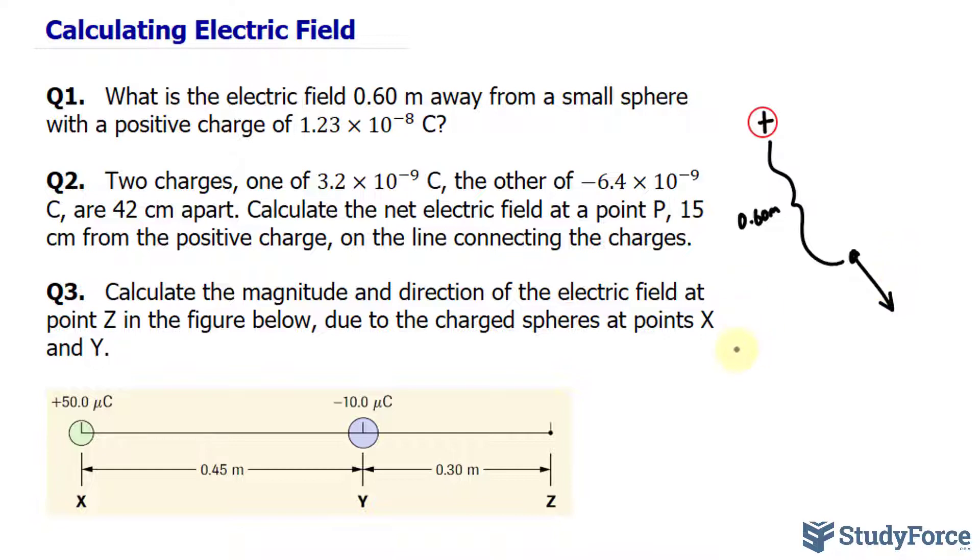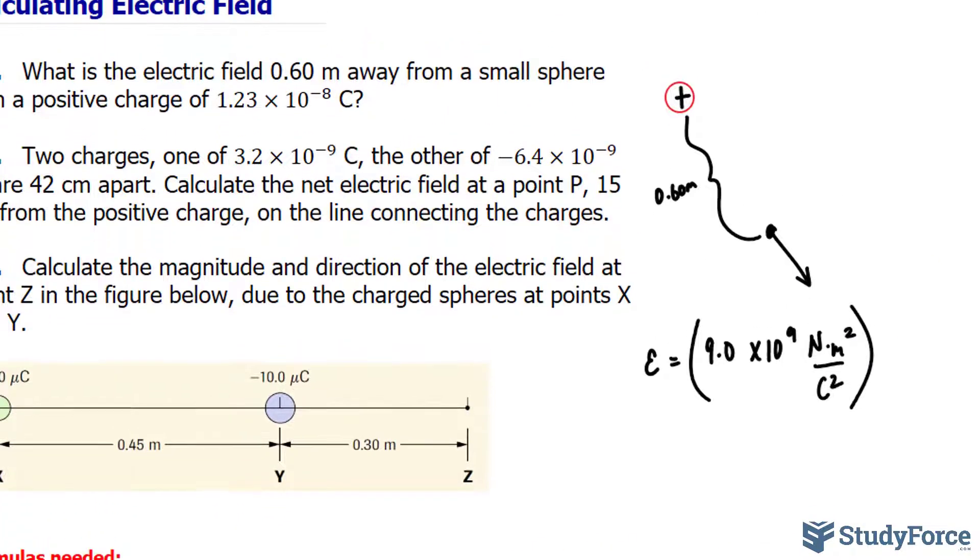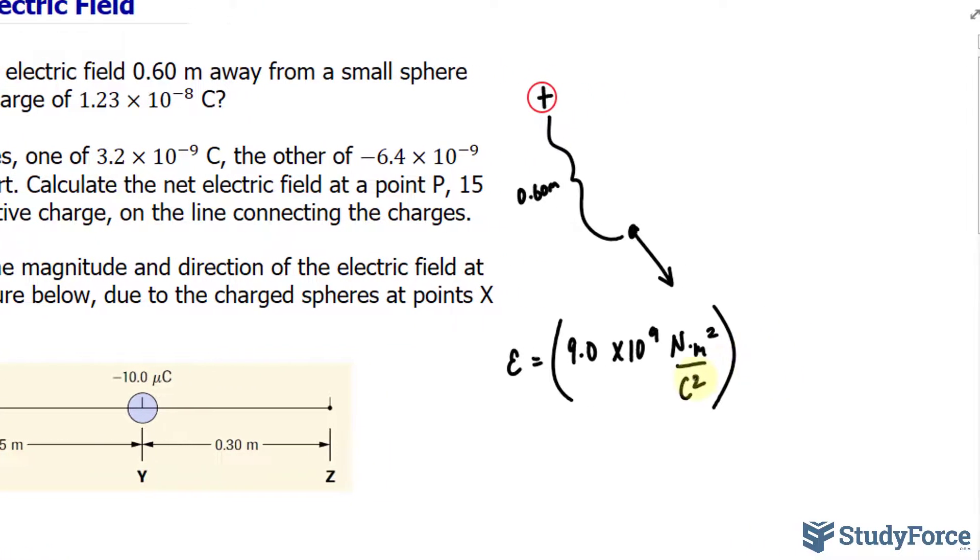Using that formula, we can find the magnitude of the electric field by taking 9.0 times 10 to the power of 9 newtons times meters squared per coulombs squared, and we'll multiply that to q, which is the charge that they've given us. Notice that this charge is positive. When you are looking for the magnitude of the electric field, you don't need to consider whether it's positive or negative. If it were negative, you would simply write it down as a positive number. Keep that in mind for question number two.